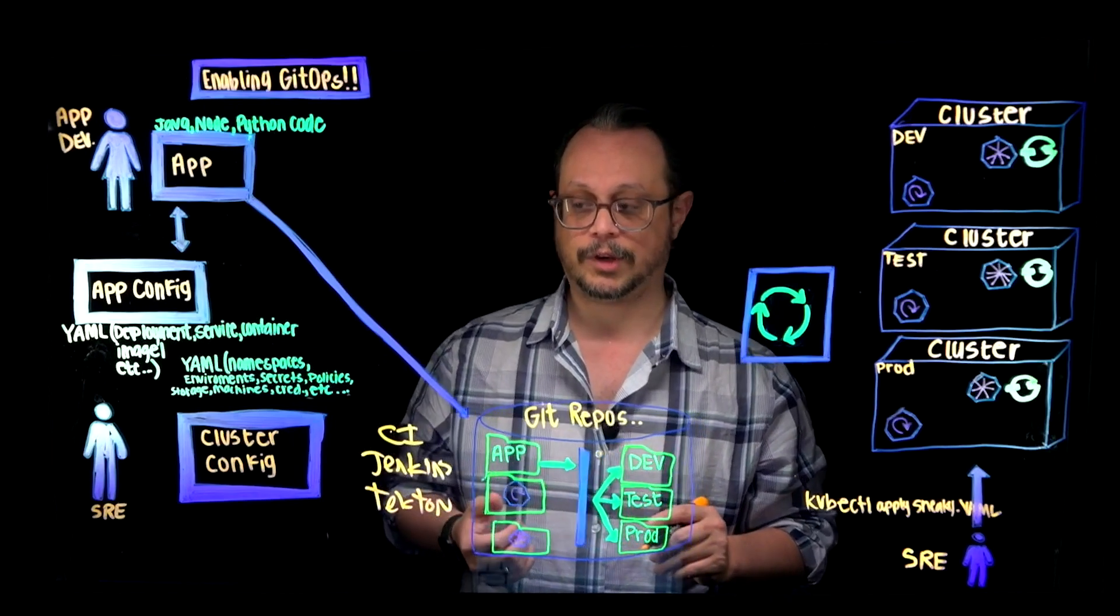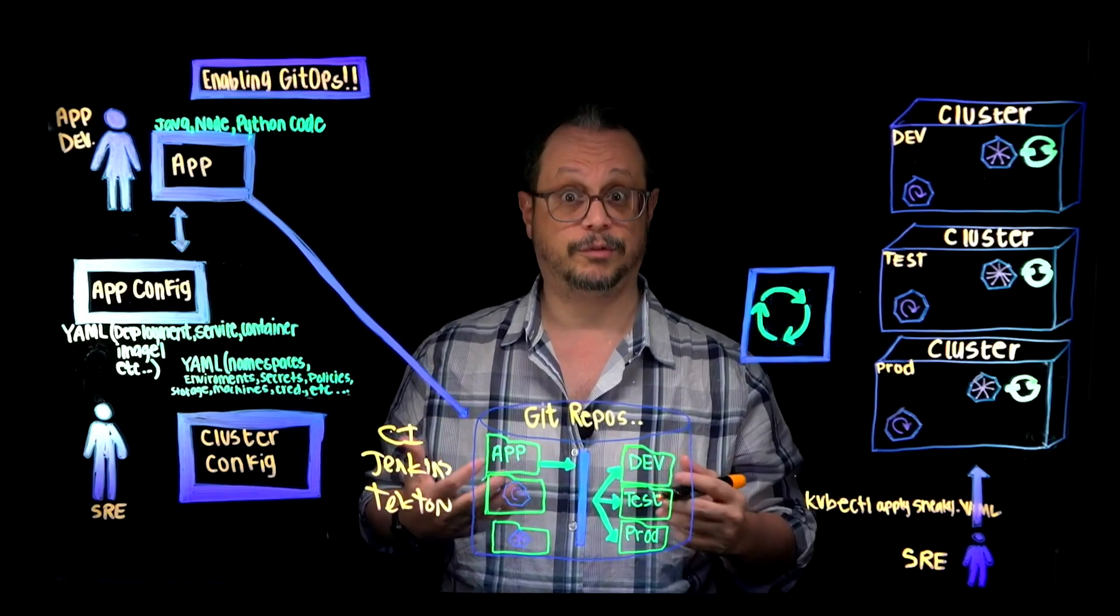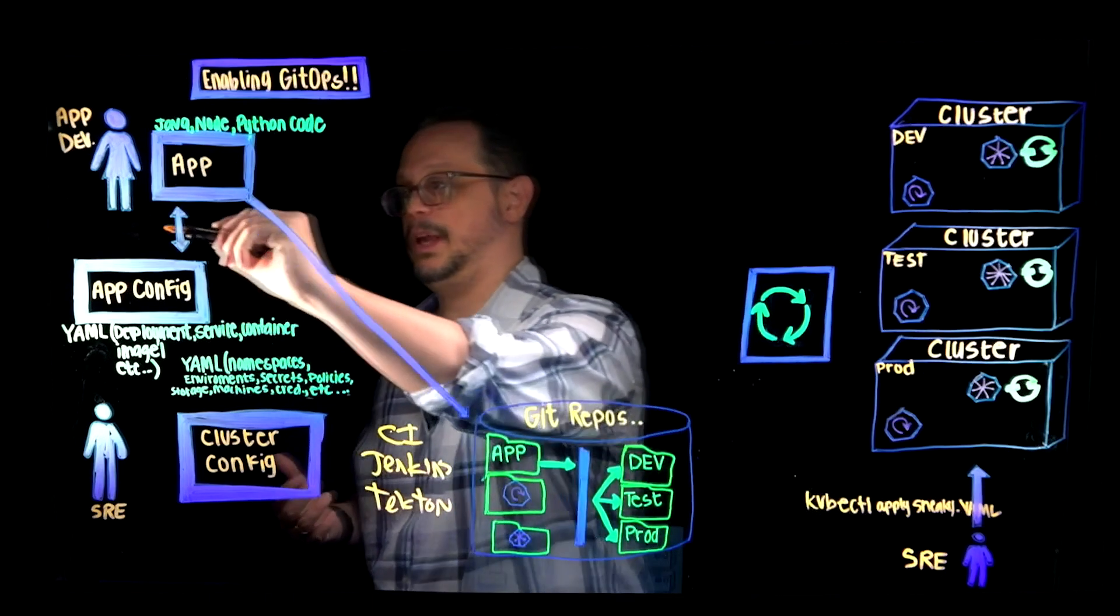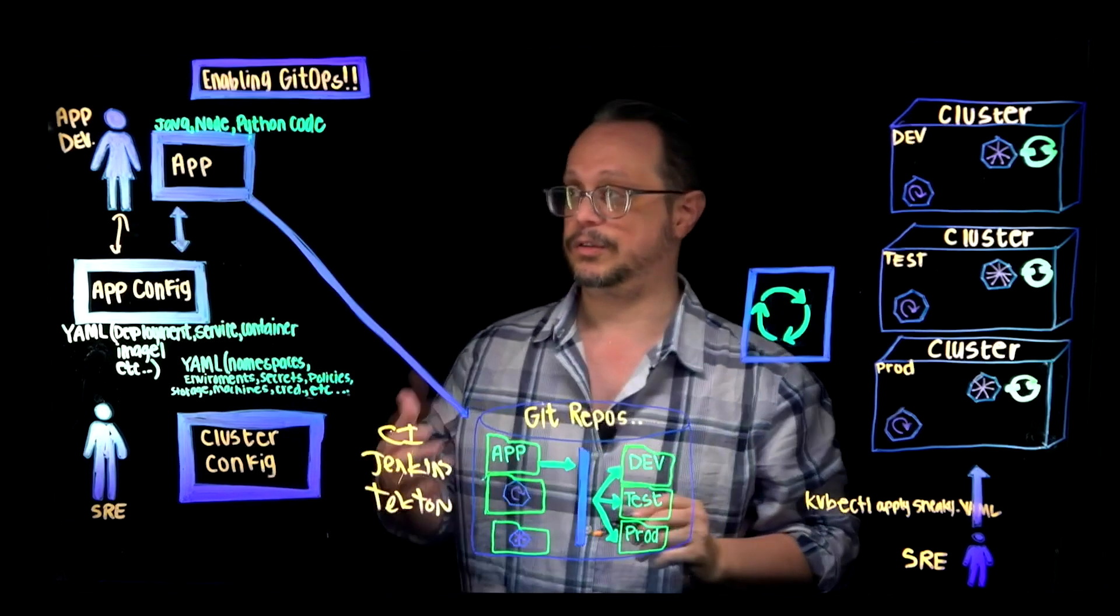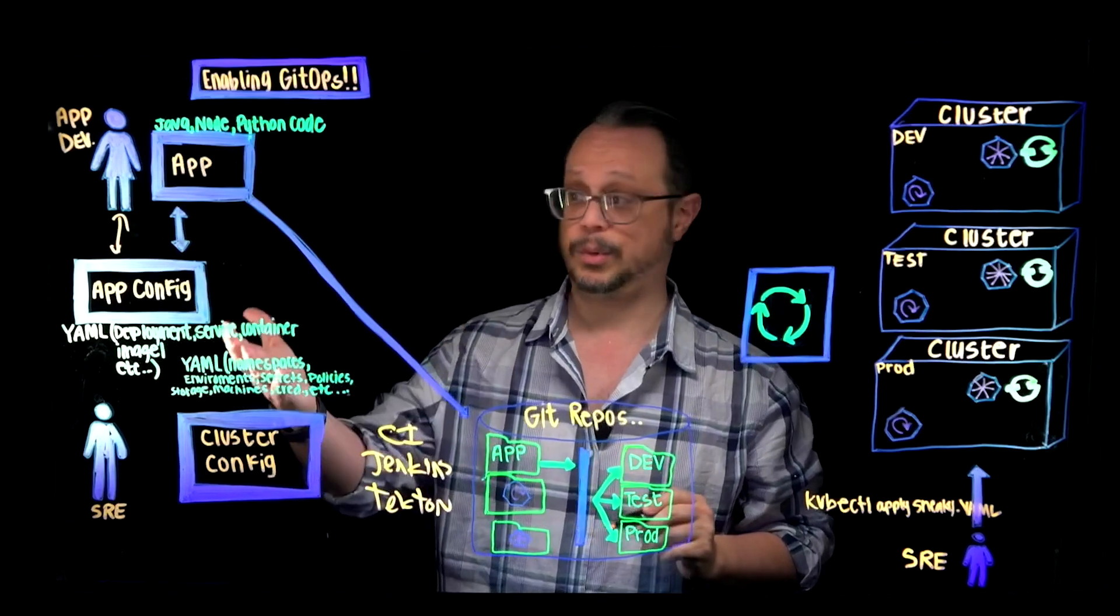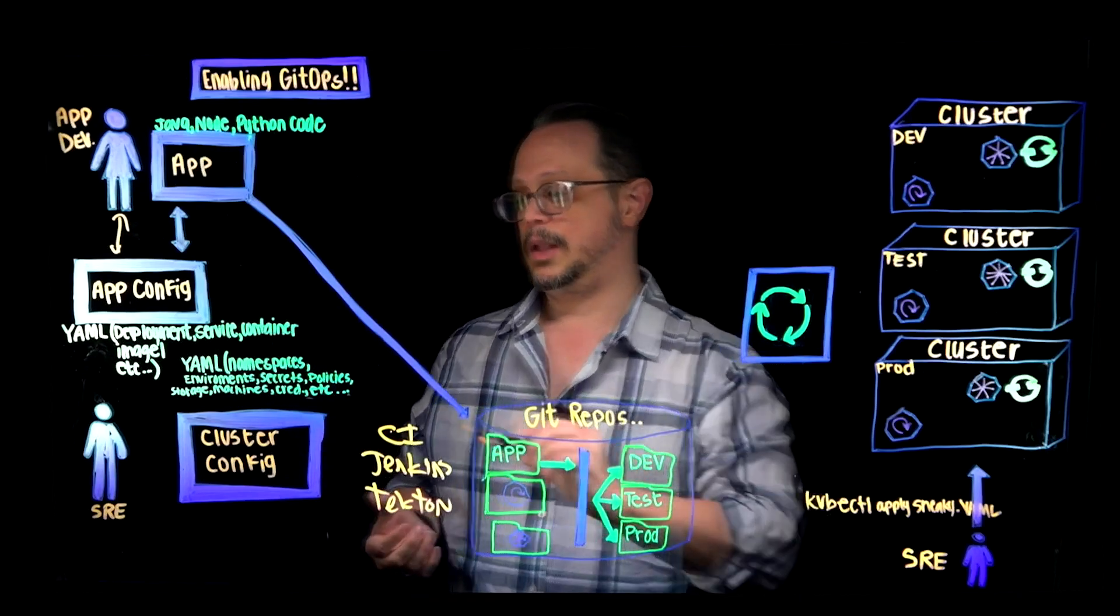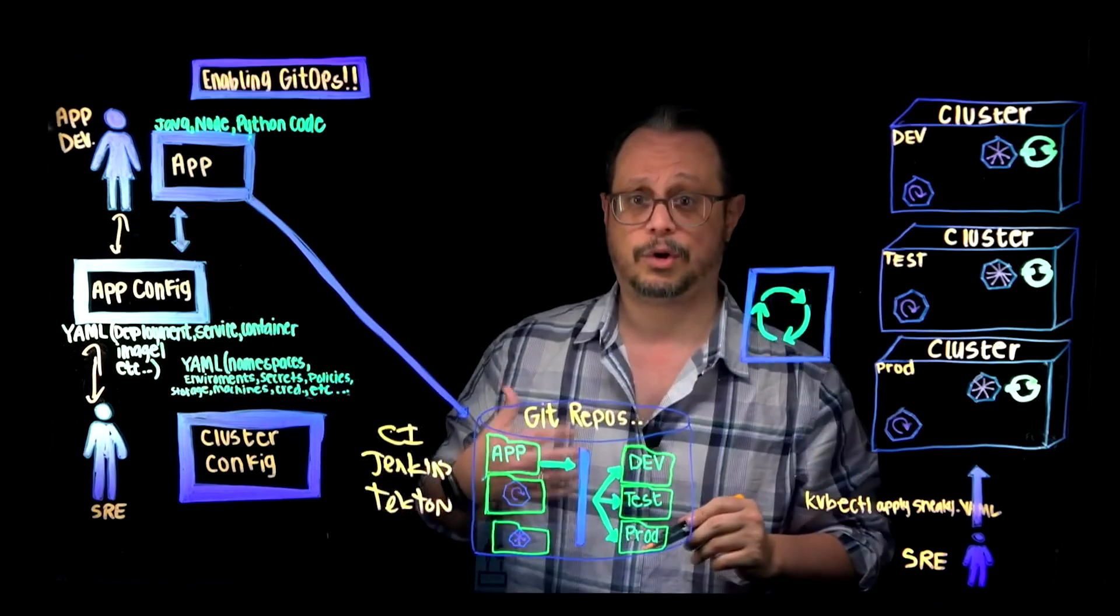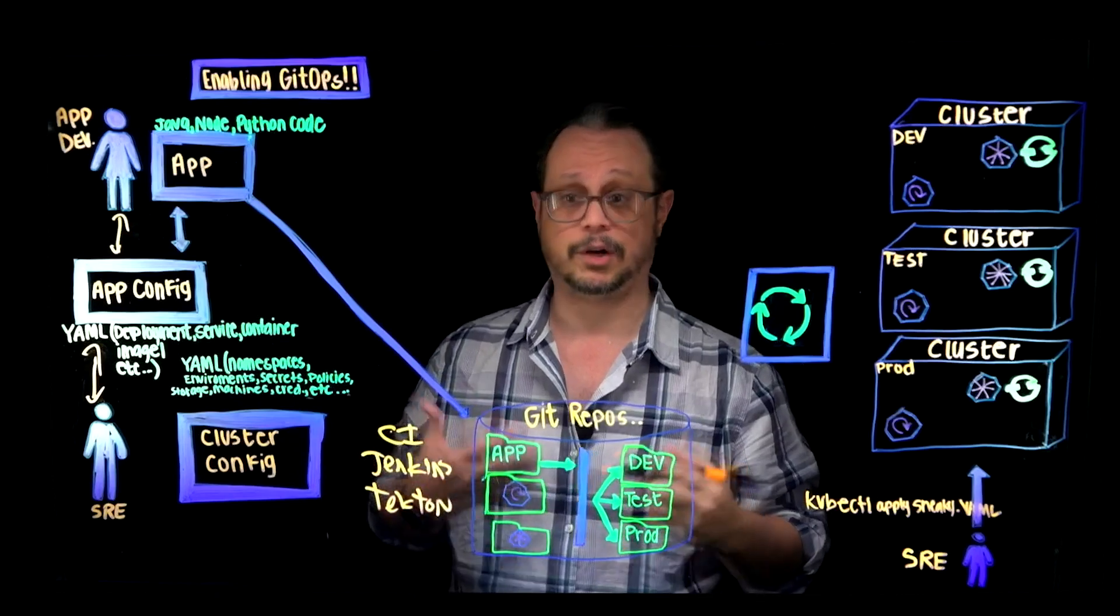In a Kubernetes context, you're building a lot more artifacts to configure that application to run in a Kubernetes environment. For example, an application developer might also have application config to define things like deployment, how it's exposed as a service, things like container images. A site reliability engineer might also share that artifact or create versions of that artifact for later environments that are more controlled.